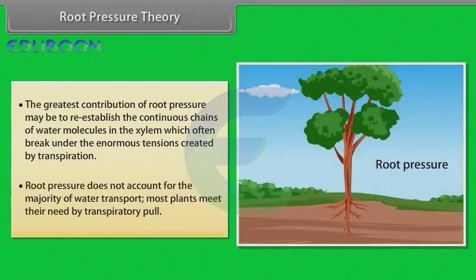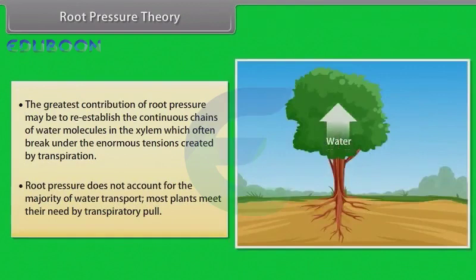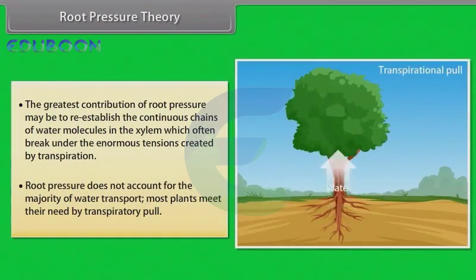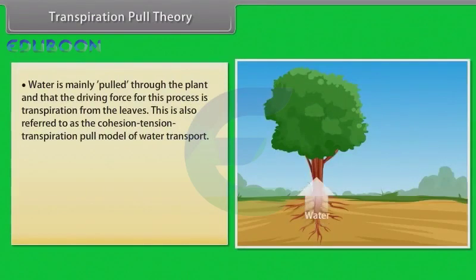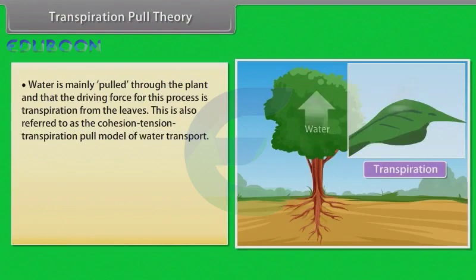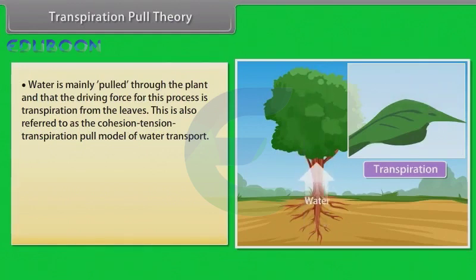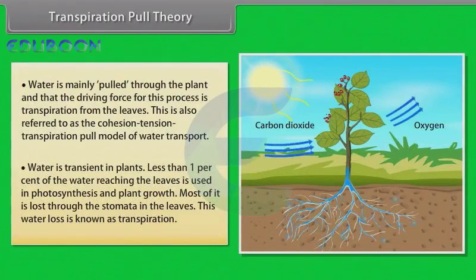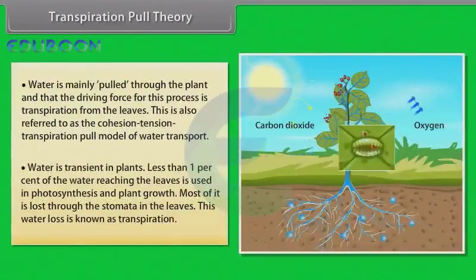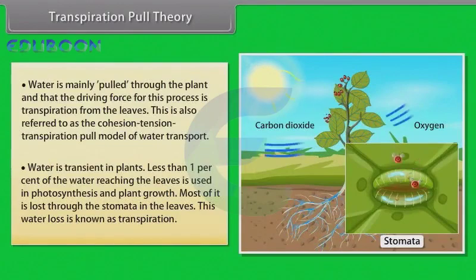Root pressure does not account for the majority of water transport — most plants meet their need by transpiratory pull. In transpiration pull theory, most researchers agree that water is mainly pulled through the plant, and that the driving force for this process is transpiration from the leaves. This is also referred to as the cohesion-tension-transpiration pull model of water transport. Less than 1% of the water reaching the leaves is used in photosynthesis and plant growth; most of it is lost through the stomata in the leaves — this water loss is known as transpiration.